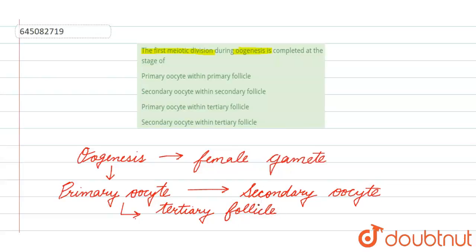Okay, so the correct answer of this question will be... the first one says primary follicle, so this is wrong. Second one, secondary oocyte, wrong. Third one is correct. Fourth one is wrong. So the correct answer is oocyte in tertiary follicle. Option number three is the correct one.